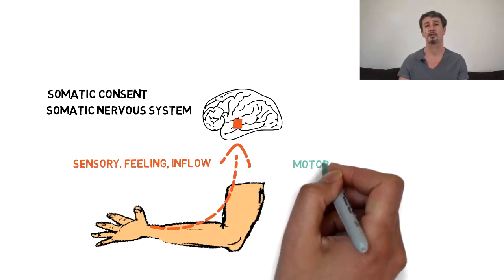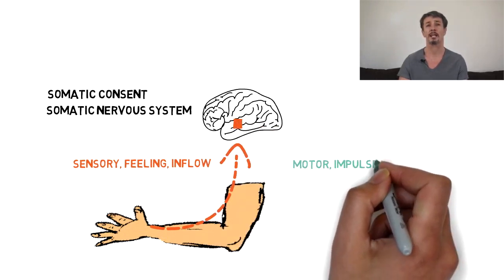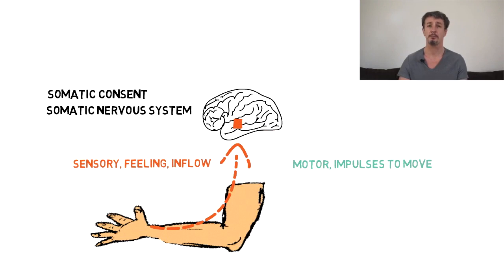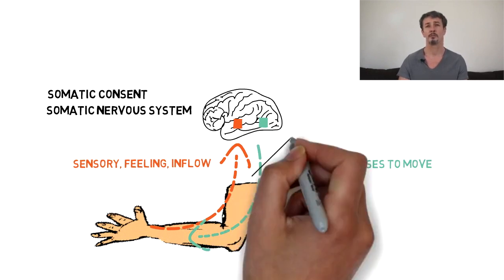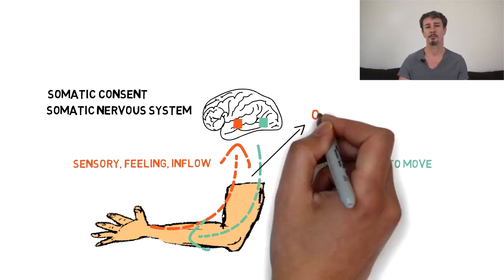And the motor division, which controls your action by sending impulses from the brain to your muscles, allowing you to be in action and to move. This is a neurological basis for touch and connection, for somatic embodiment. We seek to connect these two divisions of the somatic nervous system.